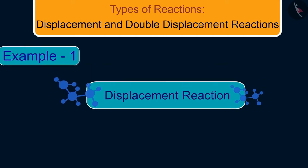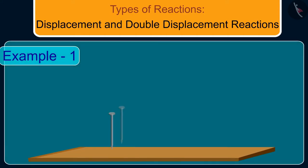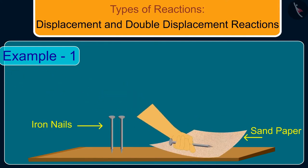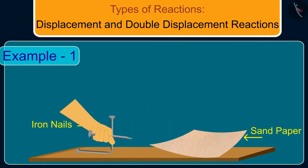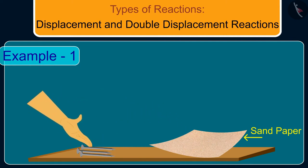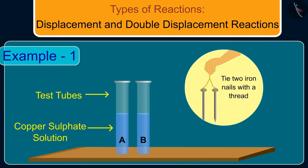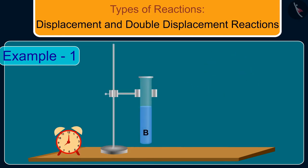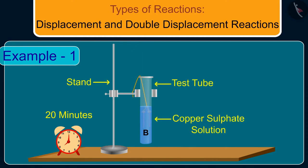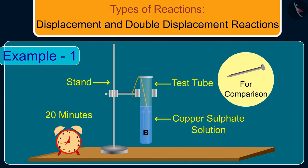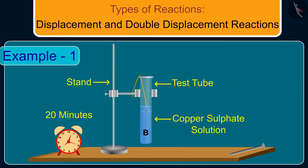Let us now understand displacement reactions with the help of an experiment. Take three iron nails and clean them by rubbing with sandpaper. Then take two test tubes marked as A and B, and in each test tube take about 10 ml of copper sulfate solution. Tie two iron nails with a thread and immerse them carefully in the copper sulfate solution in test tube B for about 20 minutes. Keep one iron nail aside for comparison.